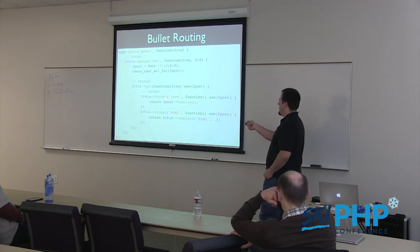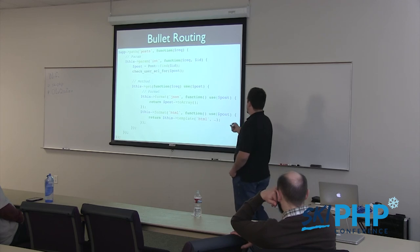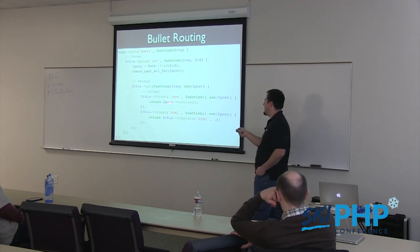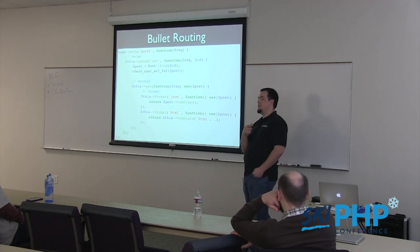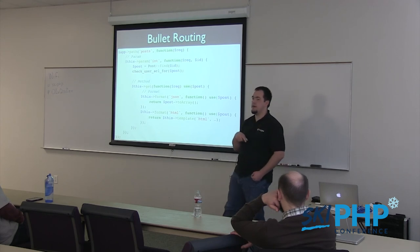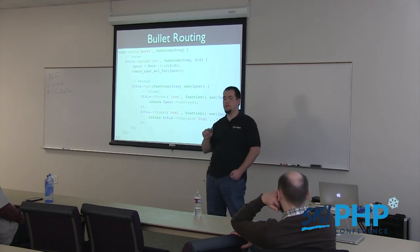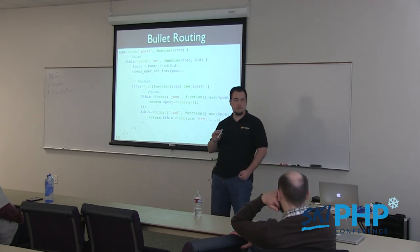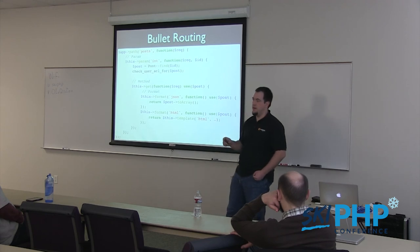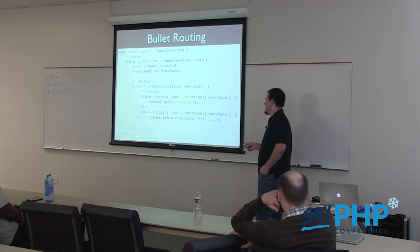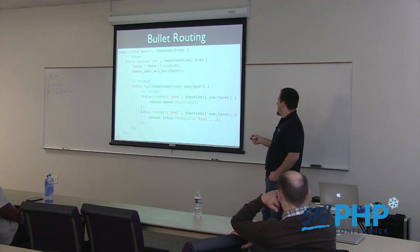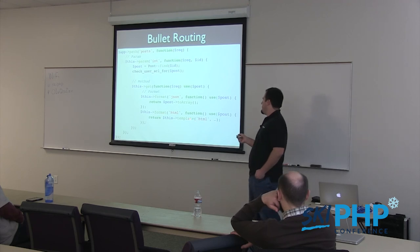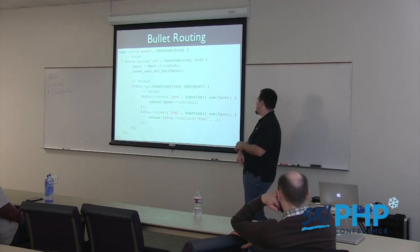Then there's the format handler - format JSON. I'll just use the post and return post->toArray(). Any array returned from a handler gets automatically JSON-encoded with the JSON content type header, application/JSON, and a content length. And here I return a template using Bullet's built-in templates.